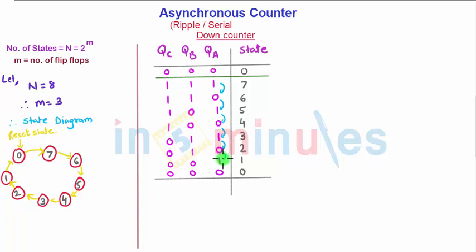Same way, if you observe the QB, then whenever QA moves from 0 to 1, QB will change its state. Till the time QA was in 1 state, afterwards it moved down to the 0 state, why? Because it is following QA.